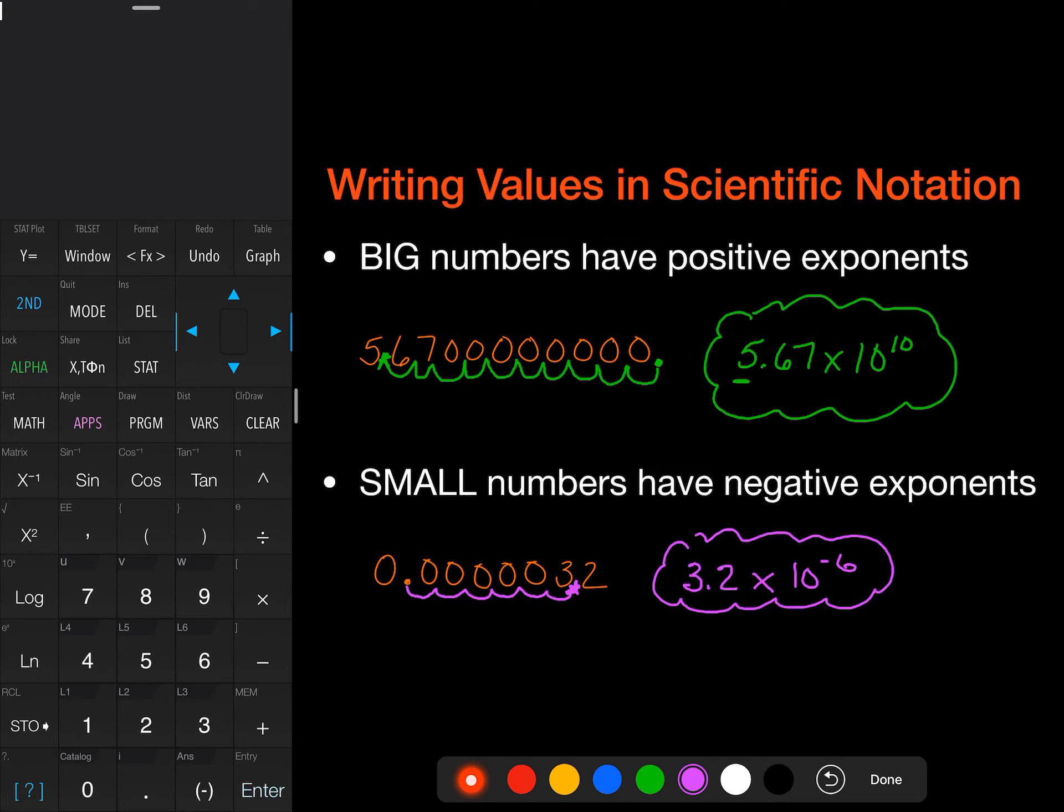So small numbers, negative exponents, big numbers, positive exponents.